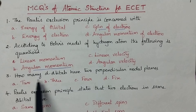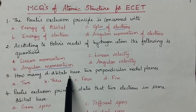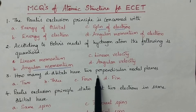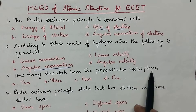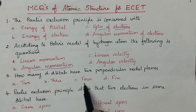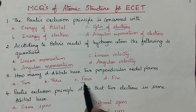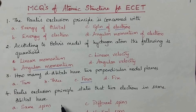How many d orbitals have two perpendicular nodal planes? Four d orbitals will have two perpendicular nodal planes.